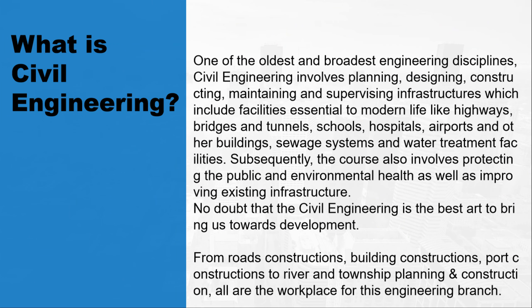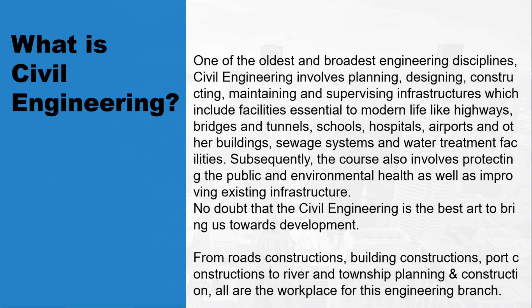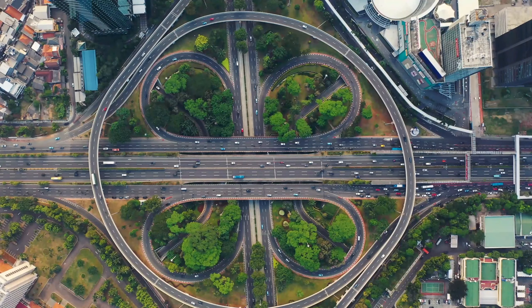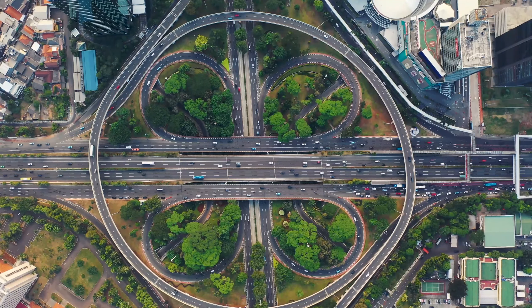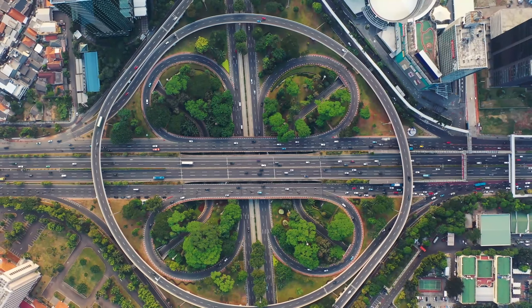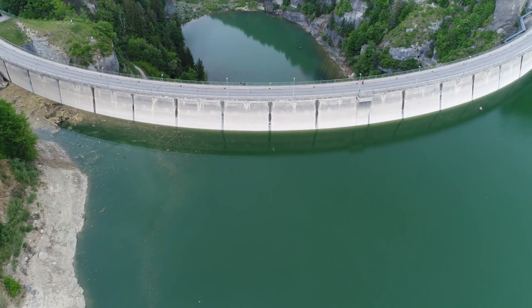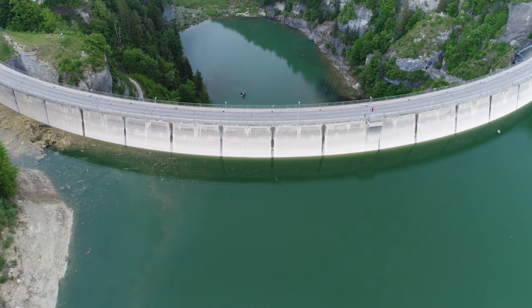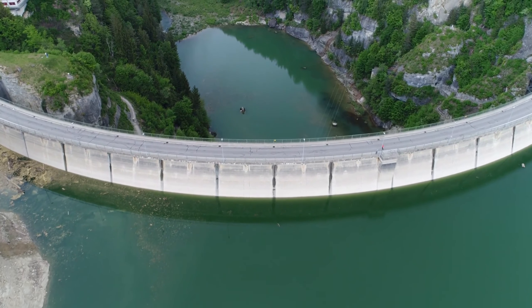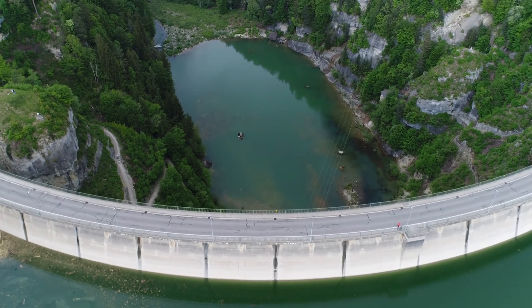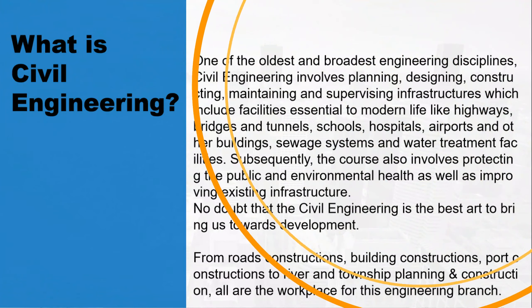What is civil engineering? Civil engineering is one of the oldest and broadest engineering disciplines. It involves planning, designing, constructing, maintaining and supervising infrastructures which include facilities essential to modern life — like highways, bridges and tunnels, schools, hospitals, airports and other buildings, sewage systems and water treatment facilities. The course also involves protecting public and environmental health as well as improving the existing infrastructure. Civil engineering is the best art to bring us towards development.